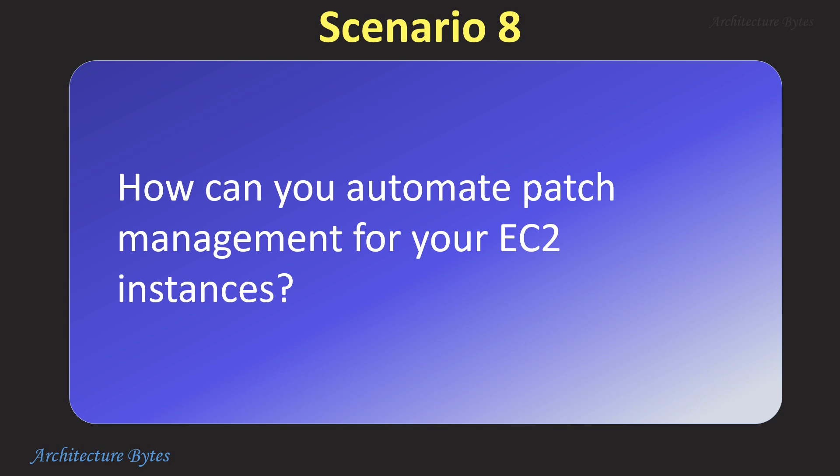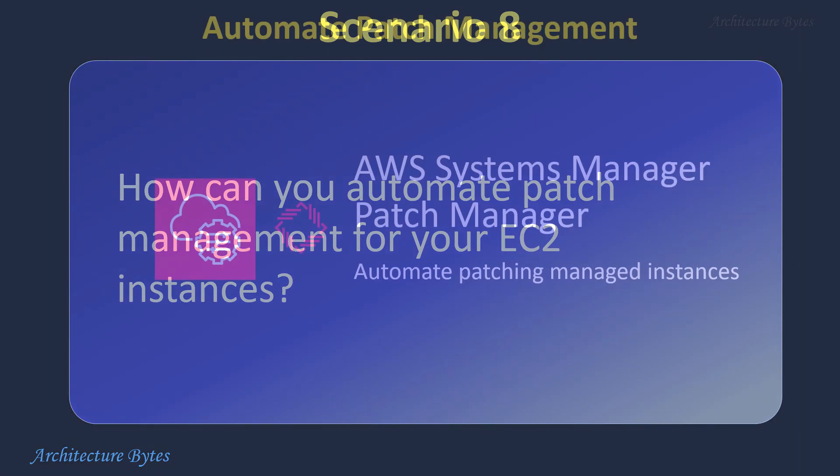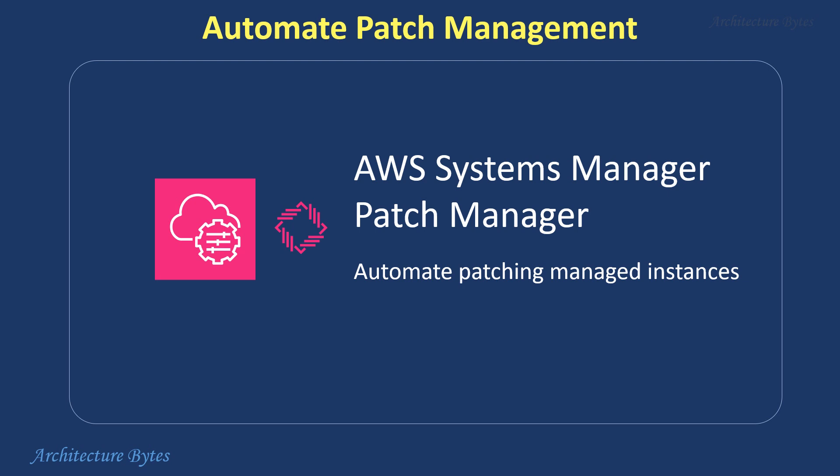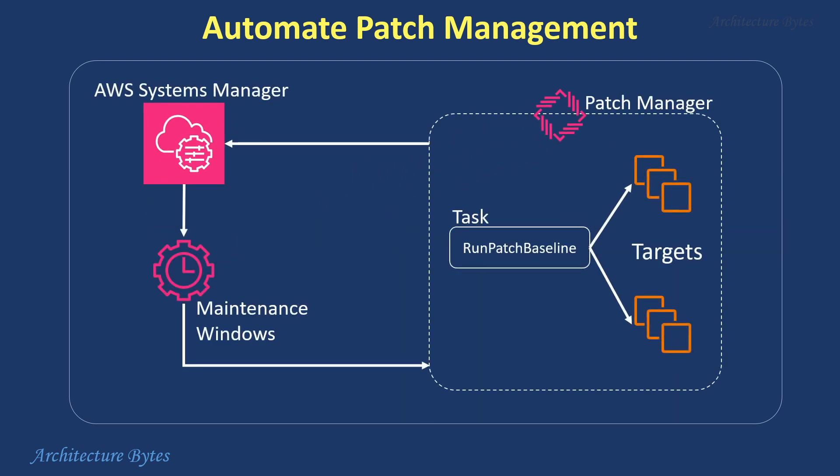How can you automate patch management for your EC2 instances? Use AWS Systems Manager Patch Manager to automate the process of patching managed instances with the latest security updates and patches. You can centrally manage patches, easily review available patches, assess their impact and approve deployments. Define maintenance windows to specify when patches are automatically applied, and use patch groups to target specific sets of instances based on tags or AWS configurations, ensuring controlled rollouts. Patch Manager can scan, download and install approved patches within your defined maintenance windows.